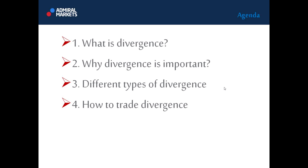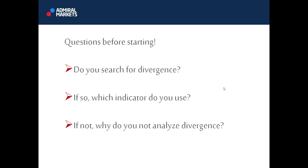Do you yourself use divergence? What indicator do you use? We have some poll questions for the audience. Let's see who is actively using divergence. We've got someone saying they use stochastics. Stochastics is also good, but for divergence we usually use MACD or the Awesome Oscillator — stochastics is not as reliable for divergence. MACD and the Awesome Oscillator are better.